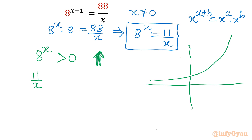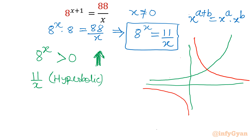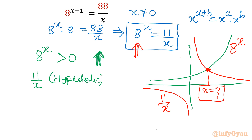Now the right-hand side graph is 11/x. This is a hyperbolic function. When x tends to infinity, the function tends towards 0; when x is 0, the function tends towards infinity. You can see the graph: 8^x is one curve and the red color graph is 11/x. The conclusion is: because the left-hand side is monotonic increasing and the right-hand side is monotonic decreasing throughout from minus infinity to plus infinity, one function is increasing and the other is decreasing, so there is at most one solution.